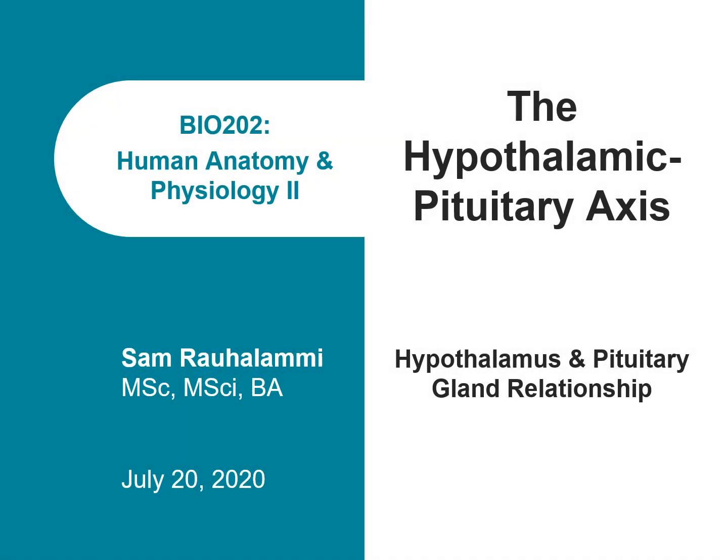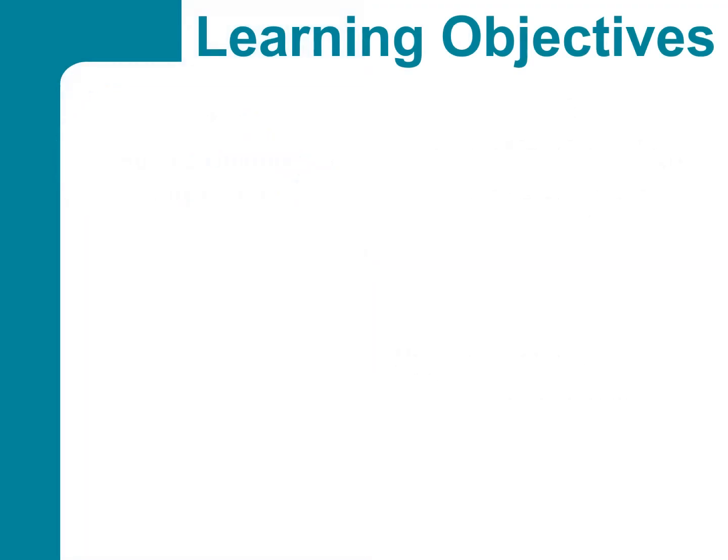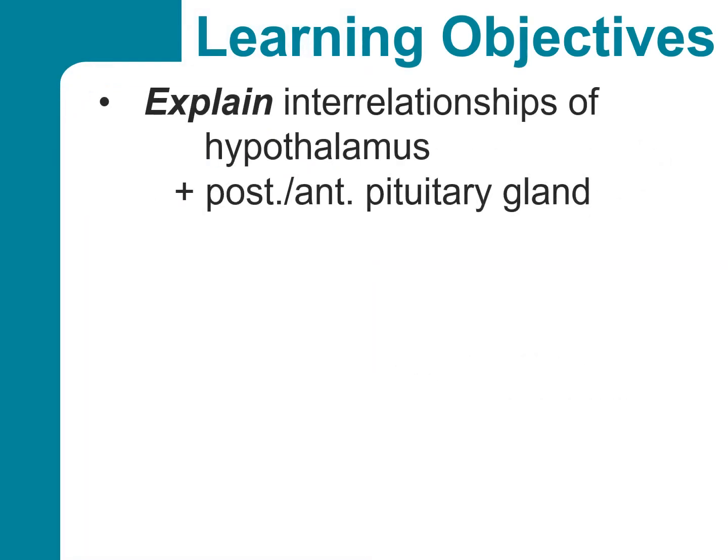Thank you for joining me on this short review of the hypothalamic pituitary axis. As the name suggests, we will be looking at the relationship between the hypothalamus and the pituitary gland. Let's define some objectives for this section. By the end of this video, I would like us to be able to explain the anatomical and functional relationship that the hypothalamus and the pituitary gland's two lobes have.